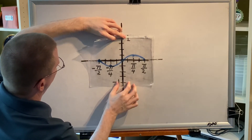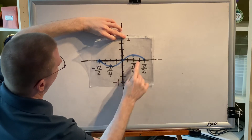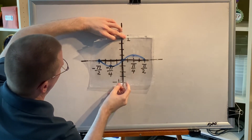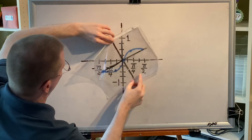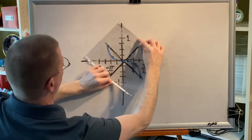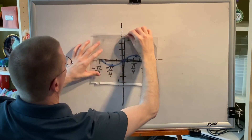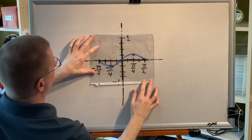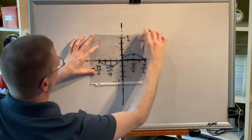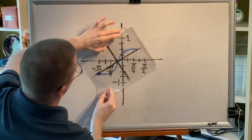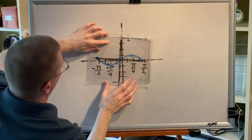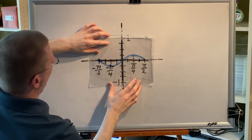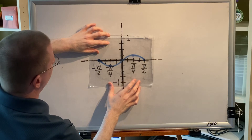Now test for origin. The hill is on the right and the valley is on the left. Spin it 180 degrees — 90, 180. Same picture. This is the after; this is the before. Same picture. This graph has origin symmetry.